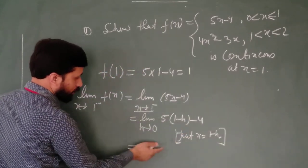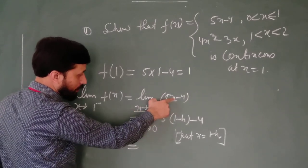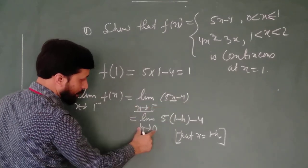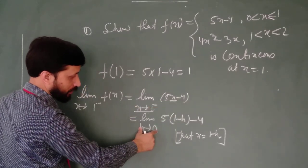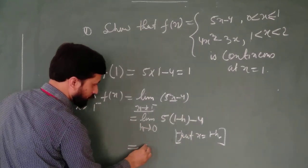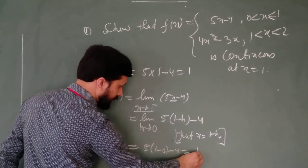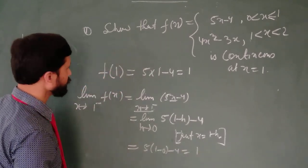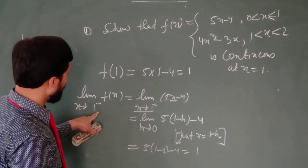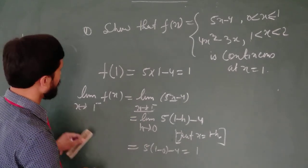After writing this, when you want to find left hand limit, you always have to replace x with this point minus h. And here, you have to write h tends to 0. Now put the value of h as 0. 5 times 1 minus 0 minus 4. And thus, we are getting here 1. So we got functional value and left hand limit. Both are coming same. Now we will calculate right hand limit.